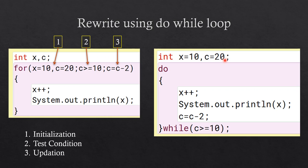Since the initialization statement is executed only once, you write x equal to 10 and c equal to 20 above the loop. Then you have the body of the loop — write do, then open curly braces, and the statements inside, then close curly braces. You don't need to worry about the output or how many times the loop executes; concentrate only on the initialization, test condition, and updation statements.